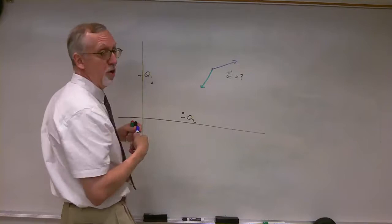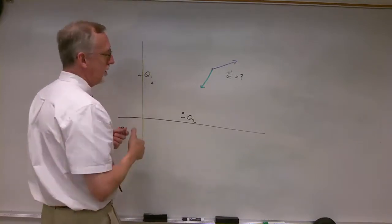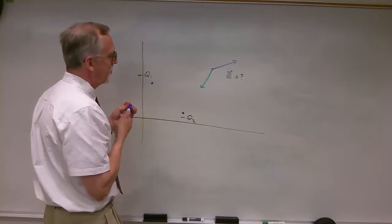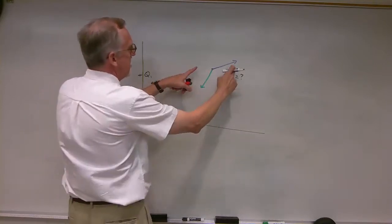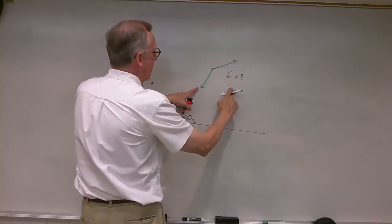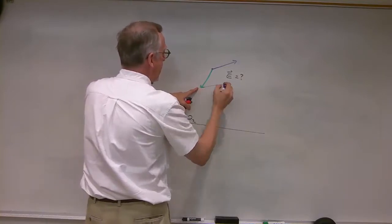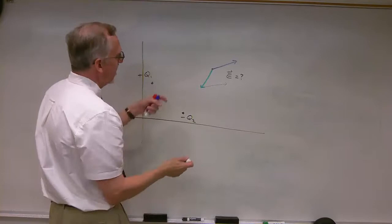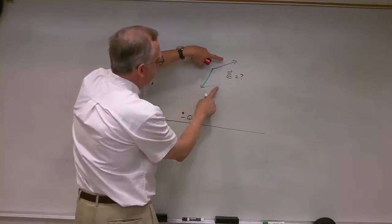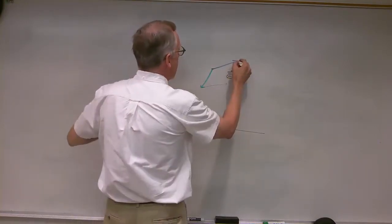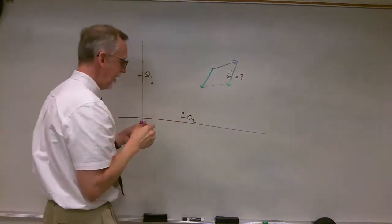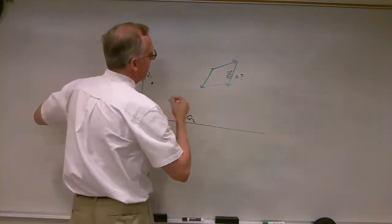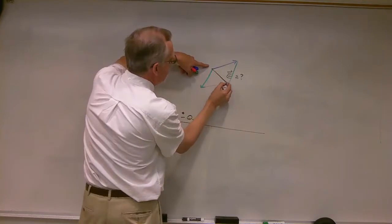Graphically, we know we can add vectors using the parallelogram rule, the law of vector addition, by taking the tail of E1 and putting it on the head of E2 to get something like that. Or we could take the tail of E2, put it on the head of E1, and get something like that.